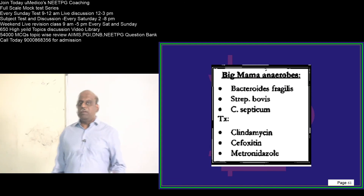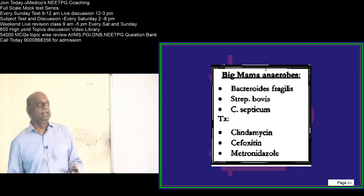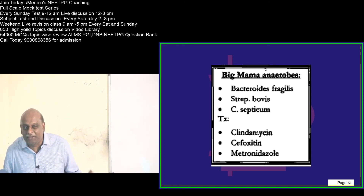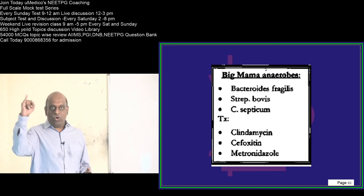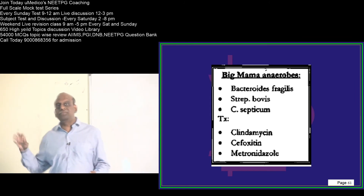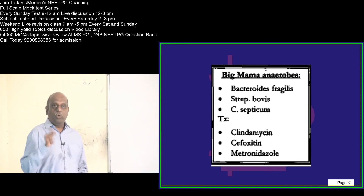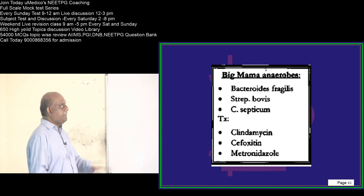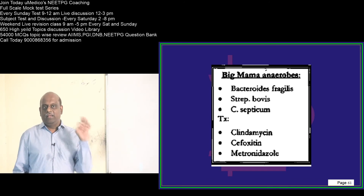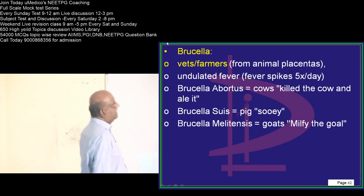Some organisms — these bacteria — are called the big mama anaerobes. What are they? Bacteroides fragilis, Streptococcus bovis, Clostridium septicum. These are called big mama anaerobes. What is the treatment? Cefoxitin, clindamycin, metronidazole are the important anaerobic antibiotics you need to remember.